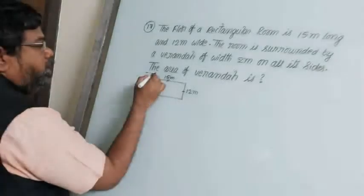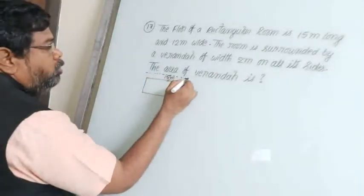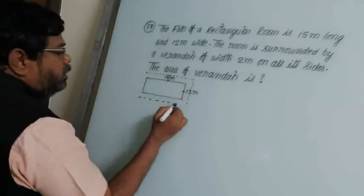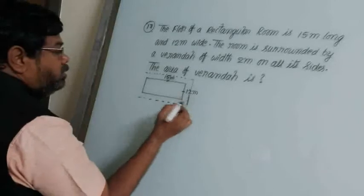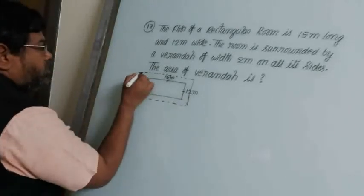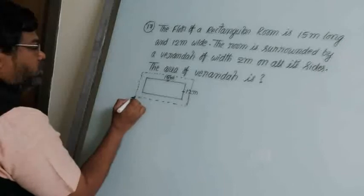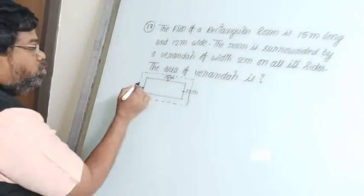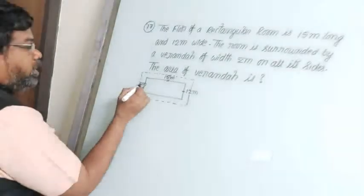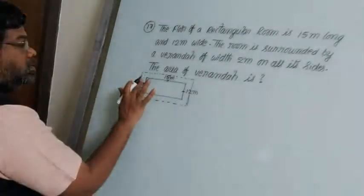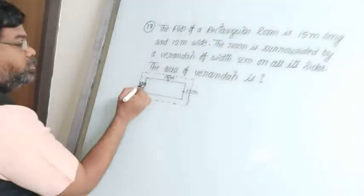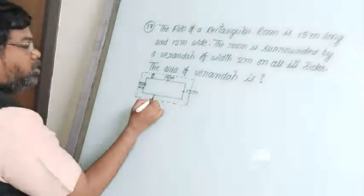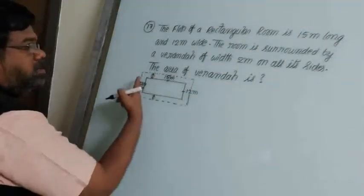There is a veranda all around with the same width on all sides. The width of the veranda is given as 2 meters on each side. So what is the area of this veranda?